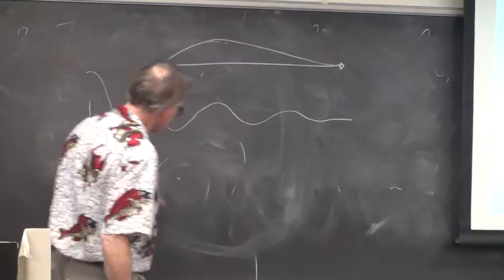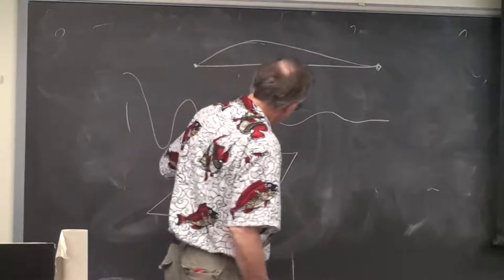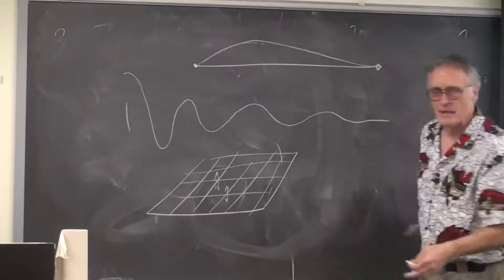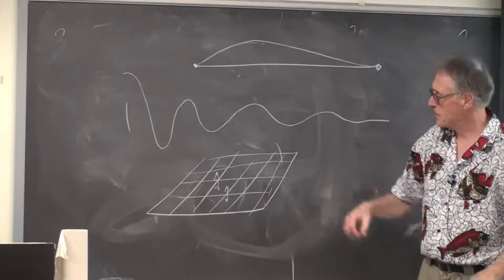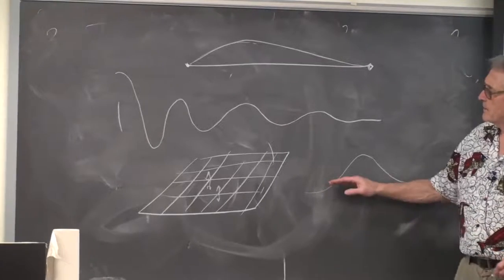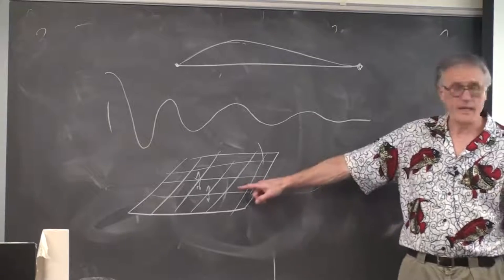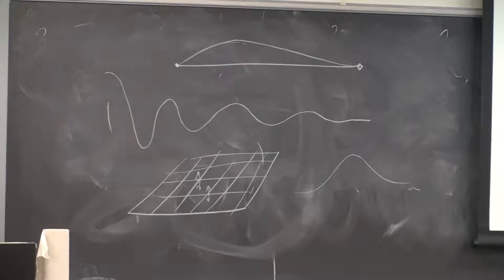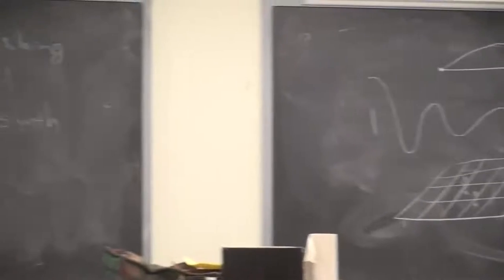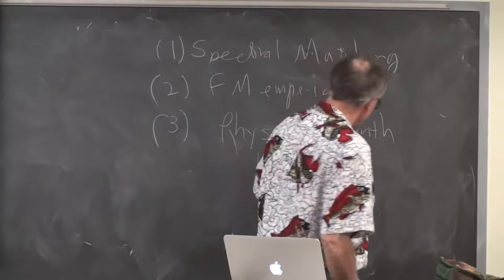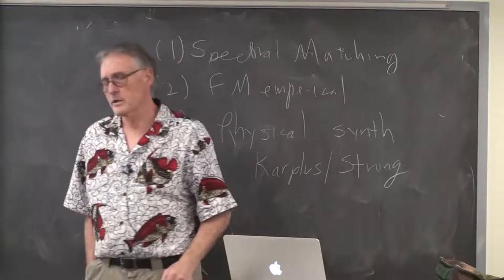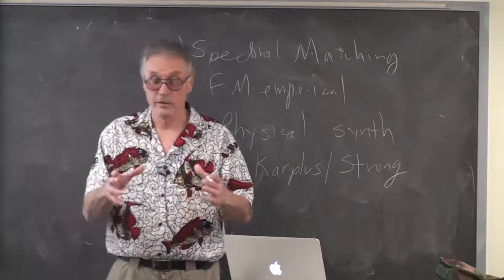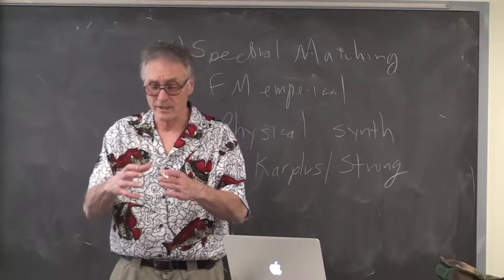If you do that in two dimensions — modeling a drum head — and allow each point to deflect up and down in a 10-by-10 or bigger grid, then flex the surface with an initial distribution that looks more or less Gaussian, you'll get a drum sound. That's fairly expensive to compute. The one-dimensional wave equation is not very expensive to compute due to the Karplus-Strong algorithm, and there are variants of that used for other kinds of instruments.